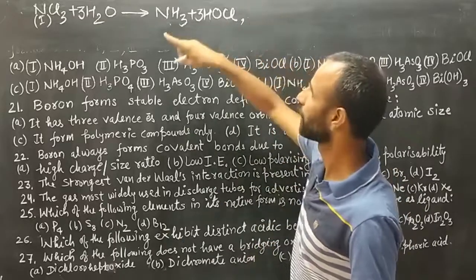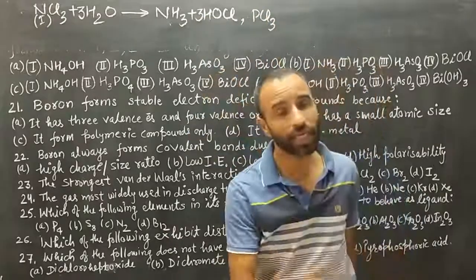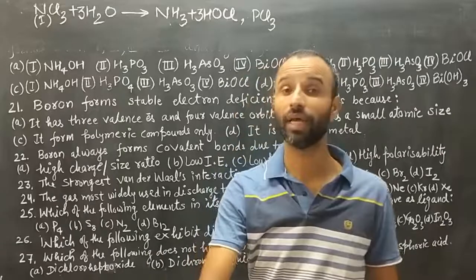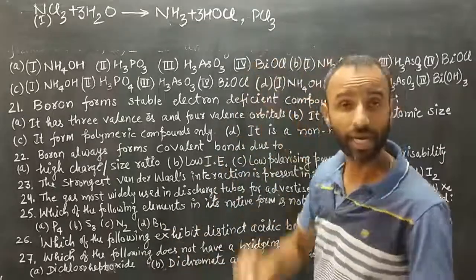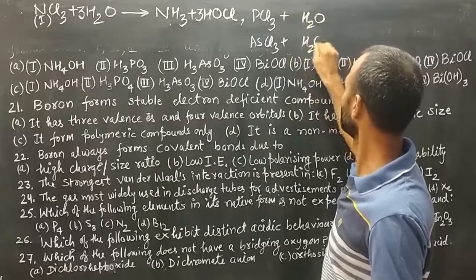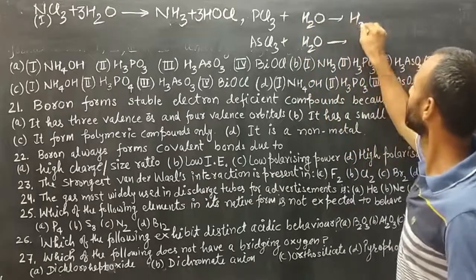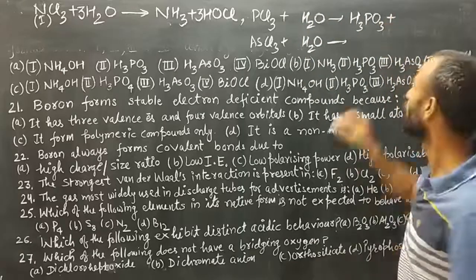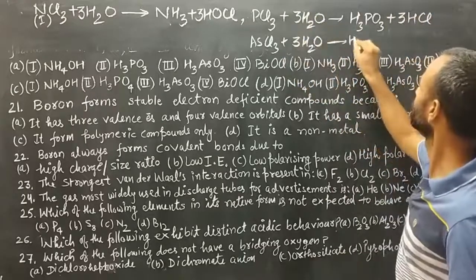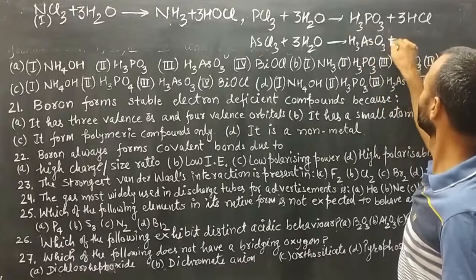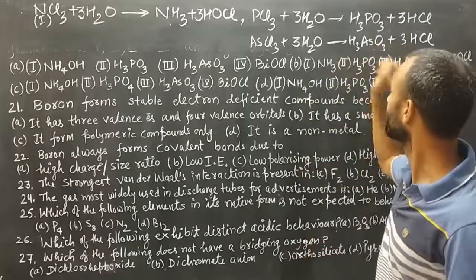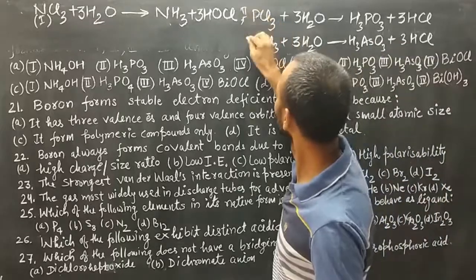PCl3 and AsCl3 are completely and irreversibly hydrolyzed, and the products formed are the same. PCl3 gives H3PO3 along with 3 HCl. Similarly, AsCl3 gives AsO3 (sometimes As2O3) along with 3 HCl. These are the products formed in the case of PCl3 and AsCl3.